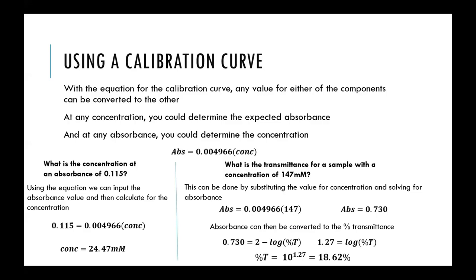For example, if you have a calibration graph and the equation for that line, you can solve for concentration if you're given an absorbance by plugging in the absorbance value. You can also determine what the absorbance or transmittance is from a concentration value plugged in directly. The absorbance itself can then be converted into percent transmittance.